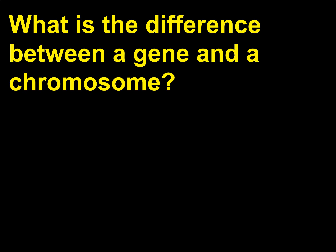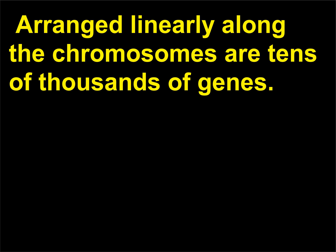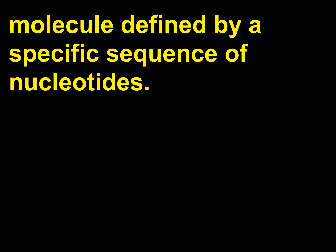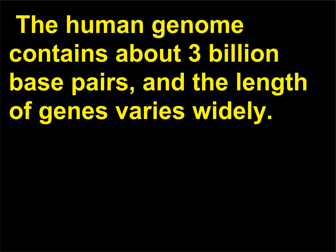What is the difference between a gene and a chromosome? The human genome contains 24 distinct, physically separate units called chromosomes. Arranged linearly along the chromosomes are tens of thousands of genes. The term gene refers to a particular part of a DNA molecule defined by a specific sequence of nucleotides. It is the specific sequence of the nitrogen bases that encodes a gene. The human genome contains about 3 billion base pairs, and the length of genes varies widely.